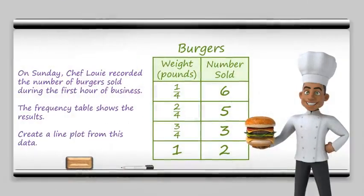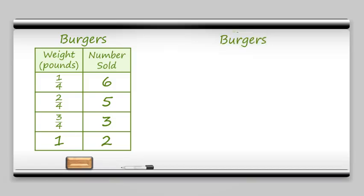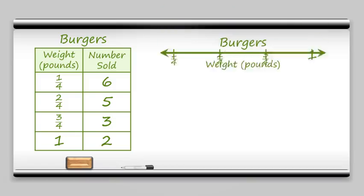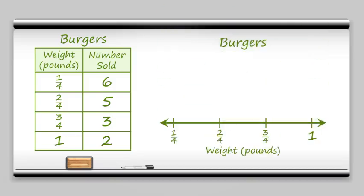So let's start off by creating a line plot. Here, we're given some information about the number of burgers sold and what size they are. We're going to build a line plot from that. So first thing we do, just like our table, we need a title. The number line is an important part of the line plot. Can't have it without it.